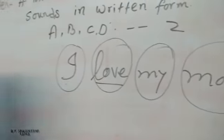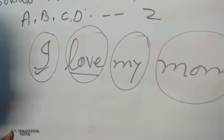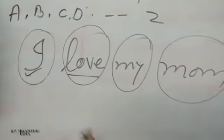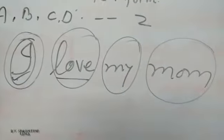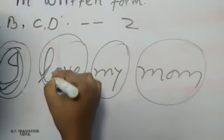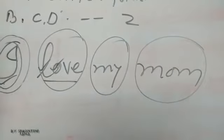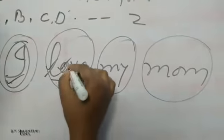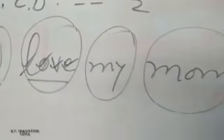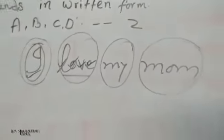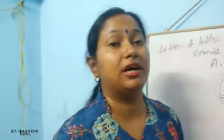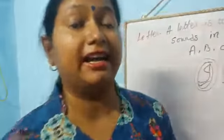For instance, 'I' is a letter. The word 'love' contains letters like L, O, V, E. That is why letters are very important.